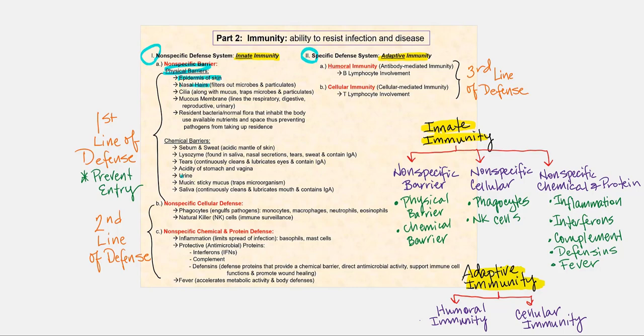We also have nasal hair, which is meant to filter out microbes and particulates. Cilia, along with mucus, will help move and trap microbes and particulates that we inhale. The mucus membrane, which lines the respiratory, digestive, and urinary tracts, contains mucus. Resident bacteria and normal flora inhabit the body, competing for available nutrients and space, keeping each other in check and preventing pathogens from gaining a foothold.